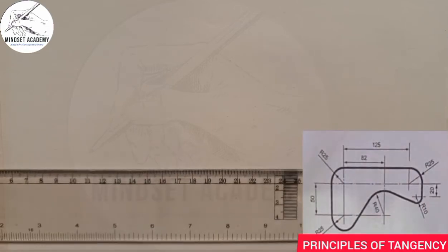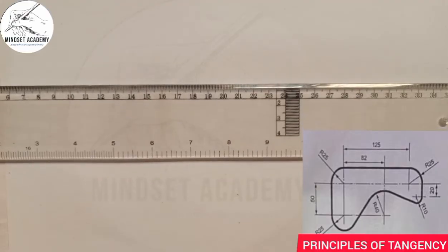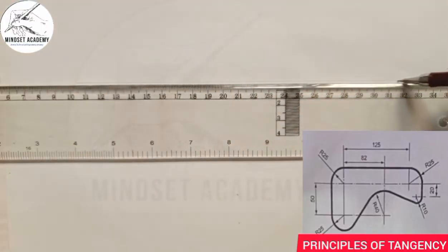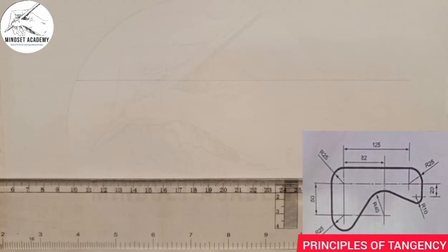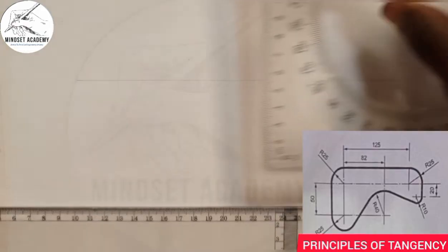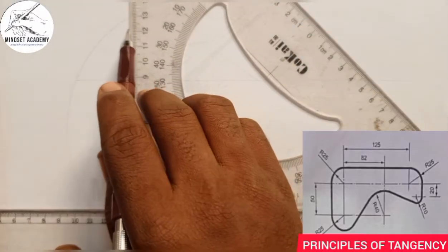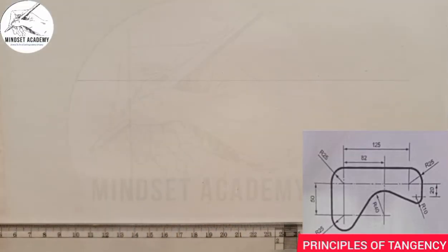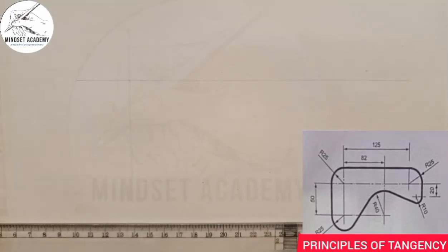Draw your horizontal line in this fashion — faint line first, as you can see. Now the next thing you have to do is to draw a vertical line in this fashion. You can see that they are all meeting at this point.